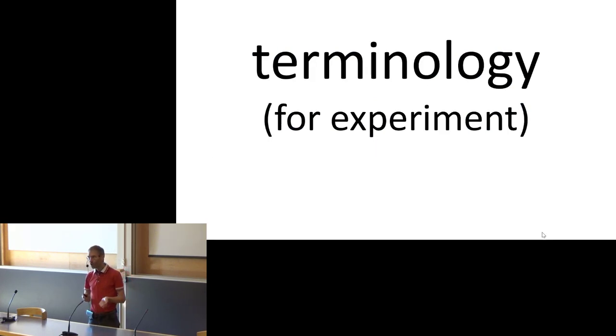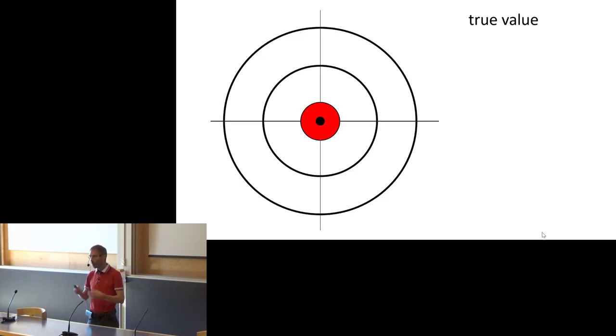Let's assume we have a property you want to measure. That could be the lattice parameter of a particular crystal and you want to measure it with X-ray diffraction. Somehow there is the exact answer to your property, the exact lattice parameter of that crystal. That is the true value.